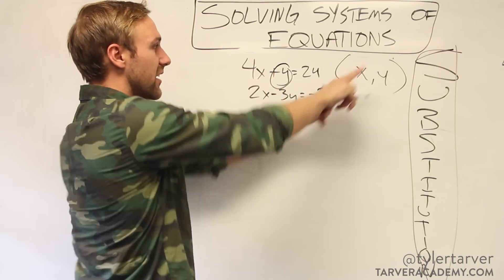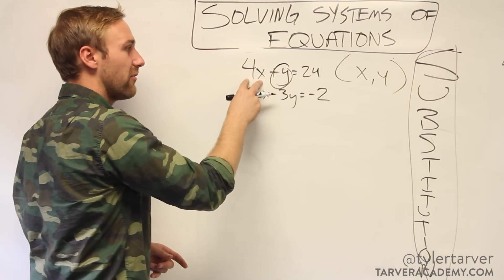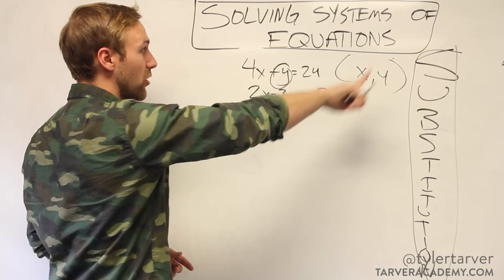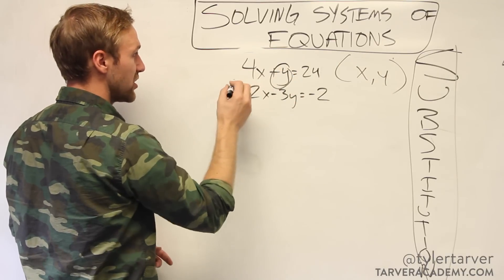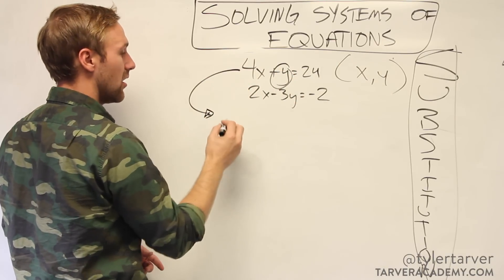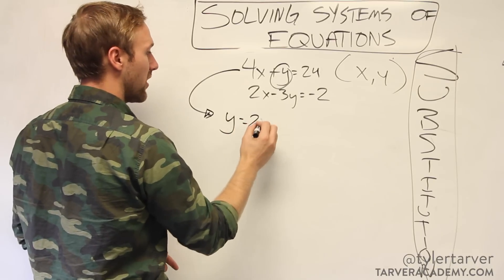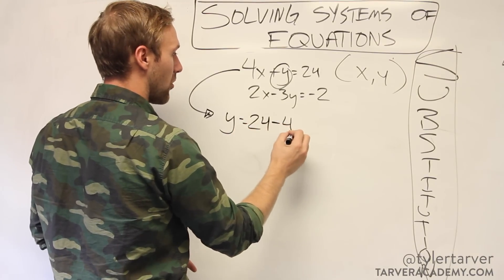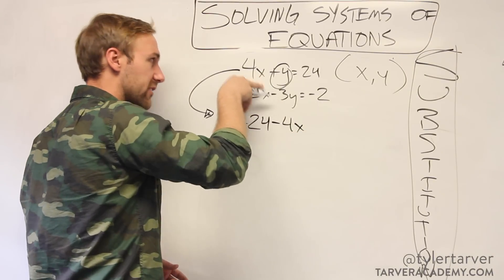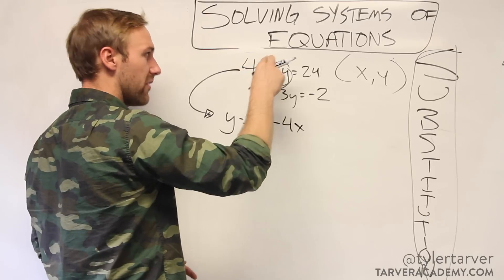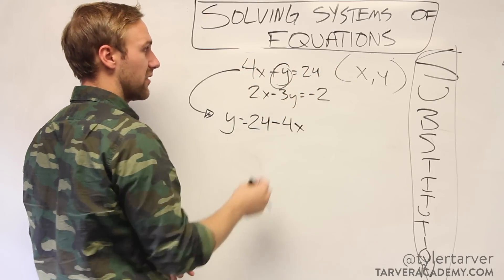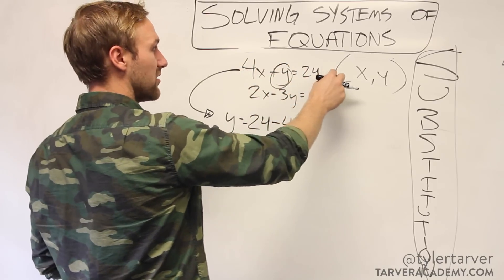So I just need to get this to the other side of the equal sign. So what do you do to get rid of a 4x? It's a positive 4x, so I would just subtract 4x. So this equation is now going to look like this: y equals 24 minus 4x. All I did was subtract the 4x to this side. It got rid of it over here. It put a minus 4x over here. Y equals 24 minus 4x.